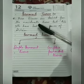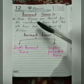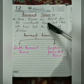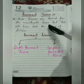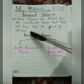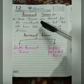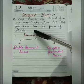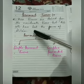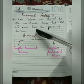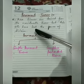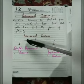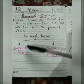Permanent tissues are those tissues which are derived from the meristematic tissues, but their cells do not have the power of division. After losing their power of division, they give rise to permanent tissues.